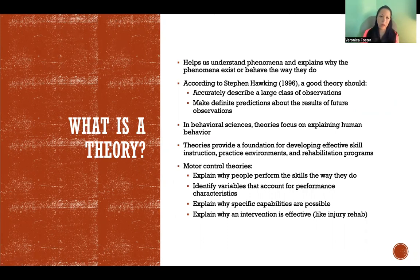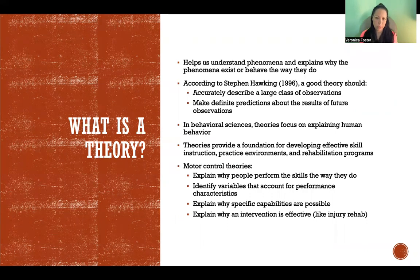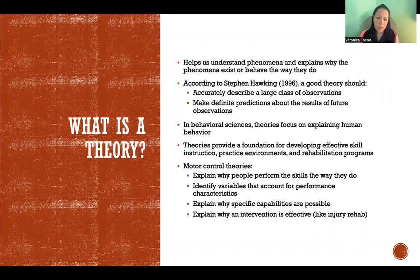Stephen Hawking wrote that a good theory should accurately describe a large class of observations and make definite predictions about the results of future observations. That applies widely in all areas of science and looks different depending on what area you're studying. In behavioral sciences, theories focus on explaining human behavior, and motor control is a behavioral science, so that's where we focus here.